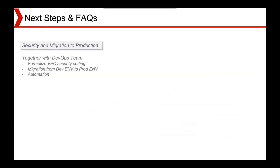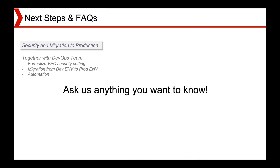Thanks, James. Our next steps involve our DevOps team members. Together with them, we will formalize our VPC security settings and migrate our workflow from dev-env to prod-env. This also includes formalizing our naming convention — our naming starts with Imba, followed by the component such as Glue, SageMaker, or Lambda, and ends with our specification. We will consult our DevOps team to streamline the whole pipeline. The final step is to automate our whole code and deployment process. Now we're open for FAQ — ask us anything you want to know.